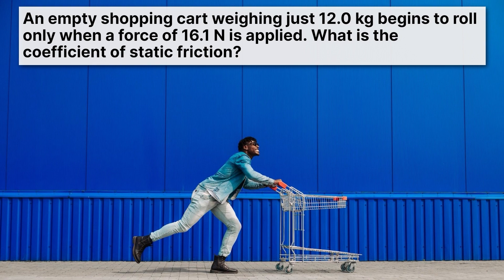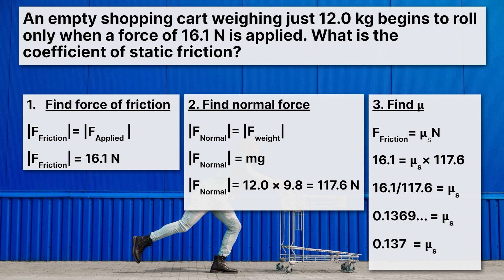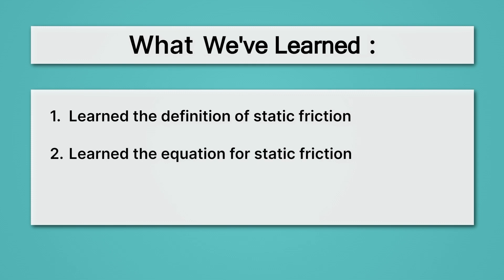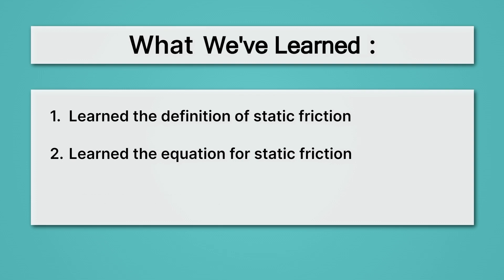Here's the full solution. Following the same three steps: the force of friction is 16.1 newtons, equal and opposite to the force applied to the cart. The normal force is equal and opposite to the weight of the cart, which is 117.6 newtons. Plugging those in, the coefficient of static friction is 0.137. To sum up: static friction is the friction force on an object at rest. The equation is friction force equals the coefficient of static friction times the normal force. And we completed practice problems solving for that coefficient.